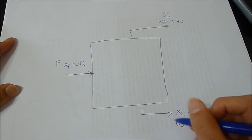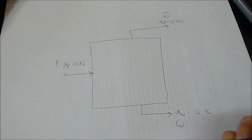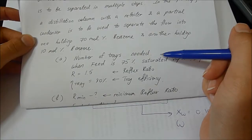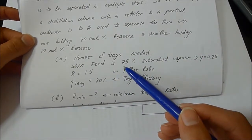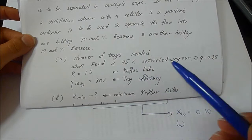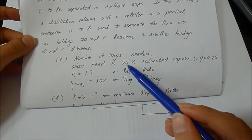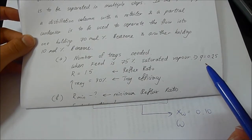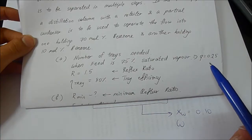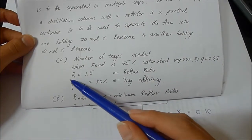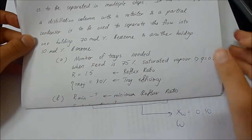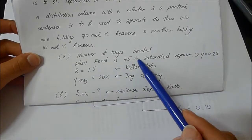Bottoms is denoted as W. The question is asking us how many trays are required, and the feed is coming in with 75% saturated vapor, which means Q equals 0.25 — Q is basically the quality of the feed. The reflux ratio is 1.5 and tray efficiency is 40%. So let's find the number of trays.